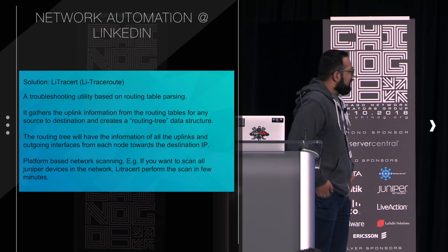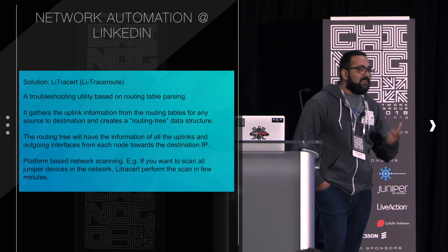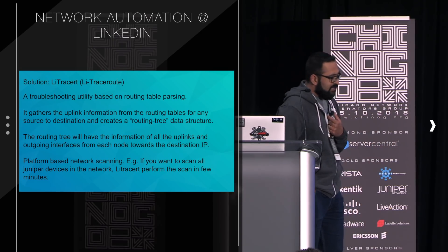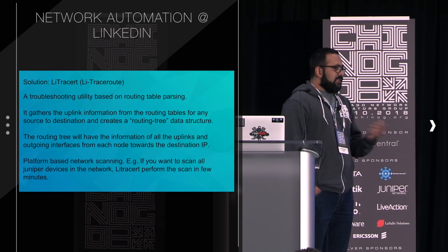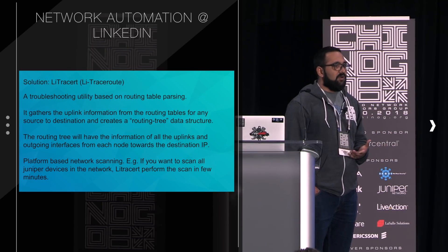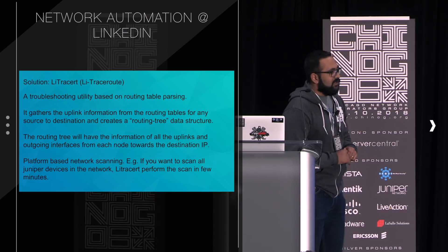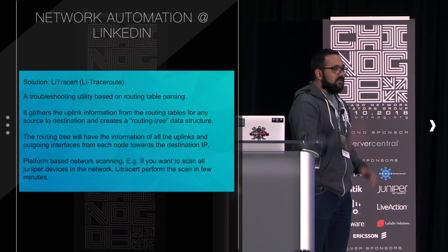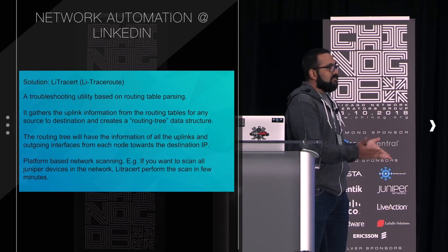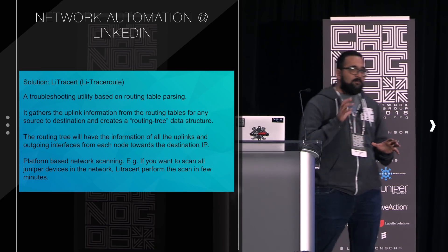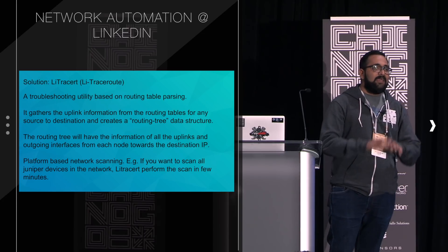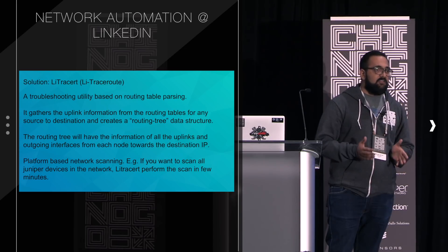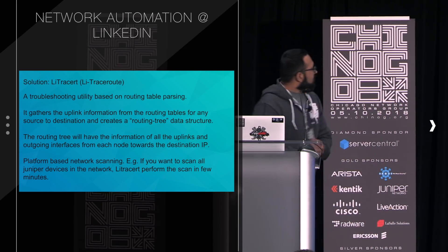LiTraceRoute is a network scanning utility that can scan any piece of your network in the least amount of time. For example, if I want to see if there are any issues with the Juniper devices in my network, I can tell this utility to scan all the Junipers, or all the Aristas, or just a specific data center. Based on whatever input you give, it scans that piece of the network and shows you if there are any issues with it.